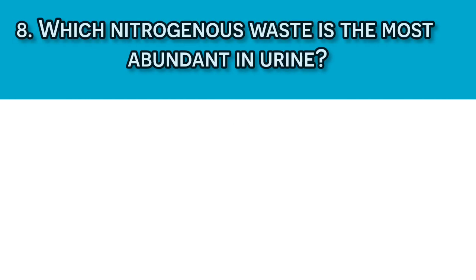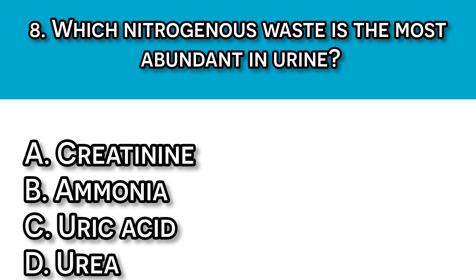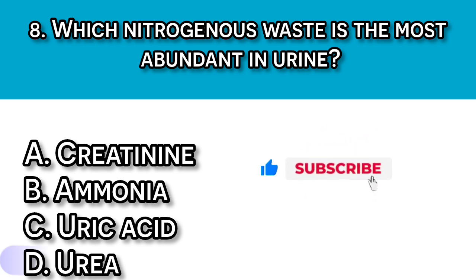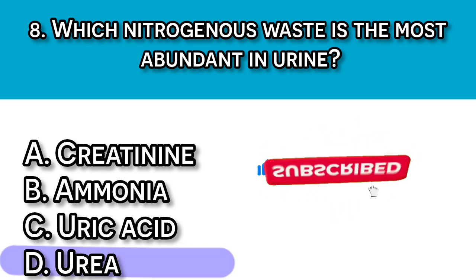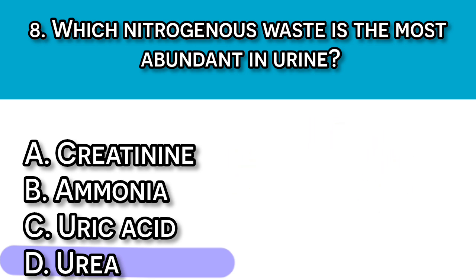Question number eight: Which nitrogenous waste is most abundant in urine? A. Creatinine, B. Ammonia, C. Uric acid, and D. Urea. Our answer here should be D, urea, because urea, a byproduct of protein metabolism, is the most abundant nitrogenous waste excreted in urine.